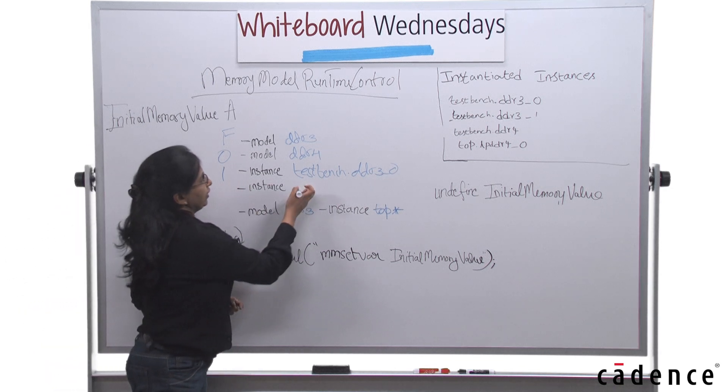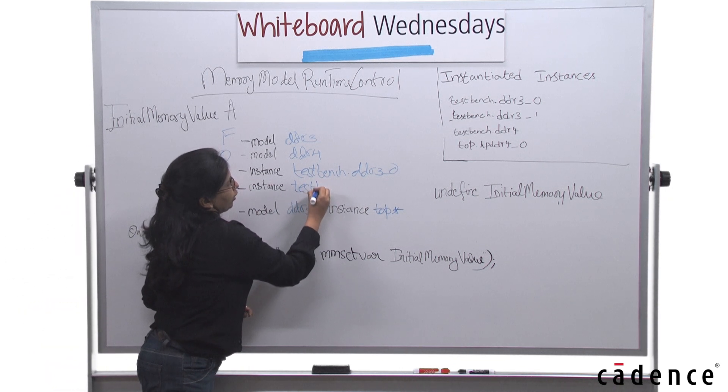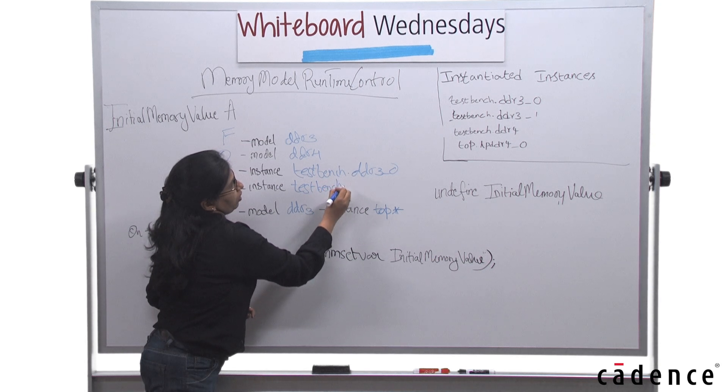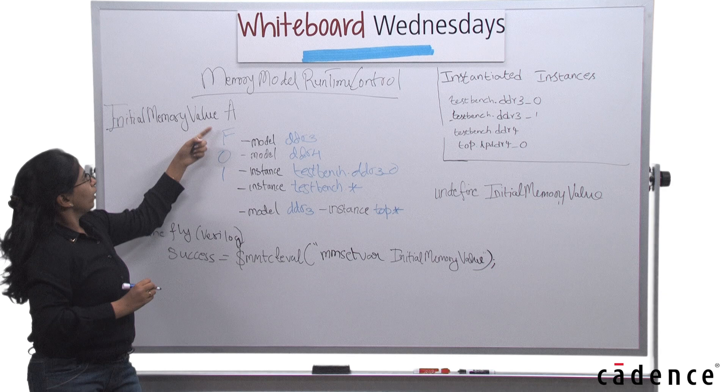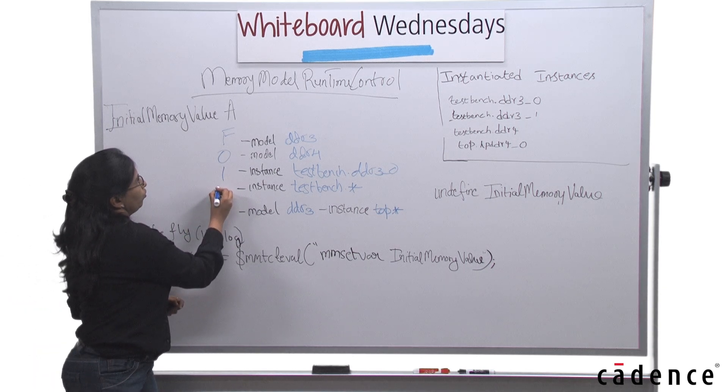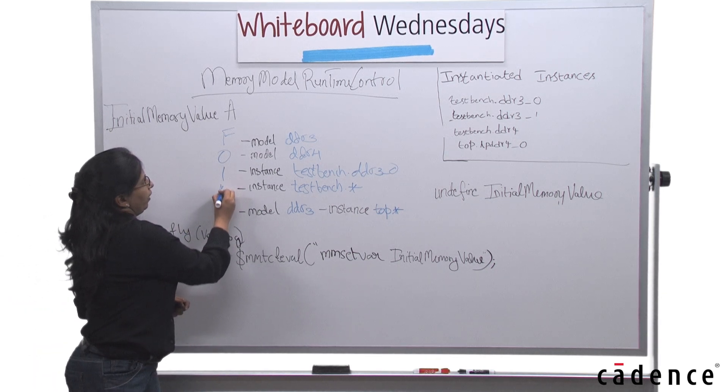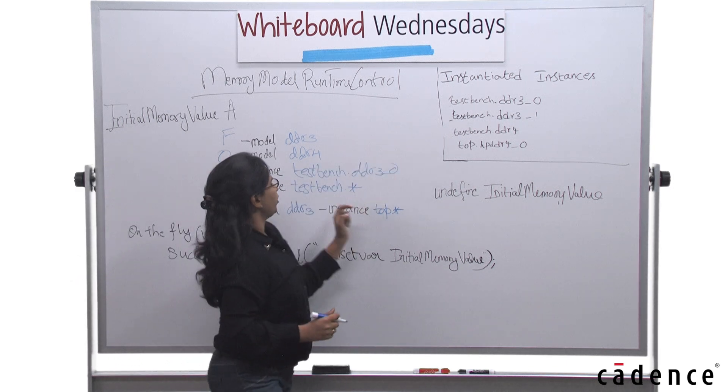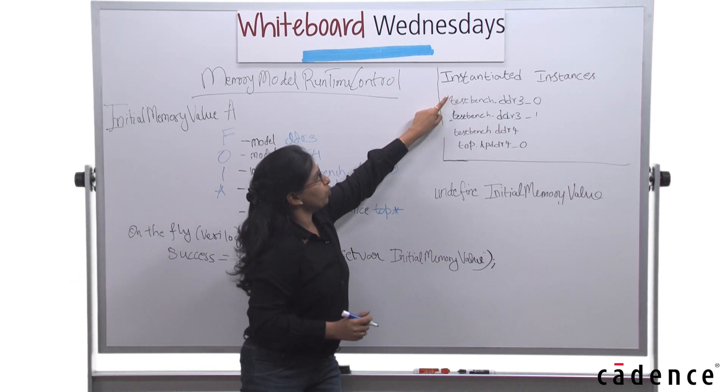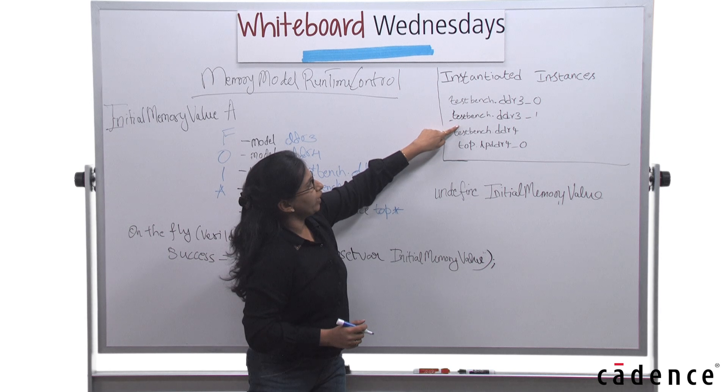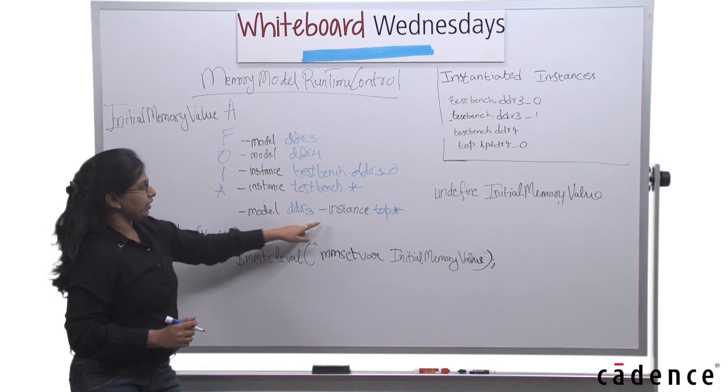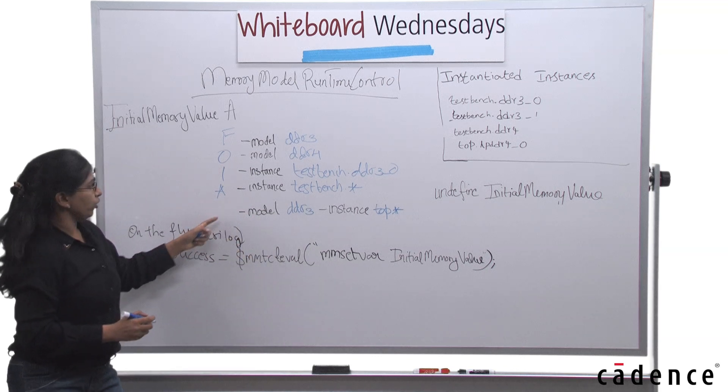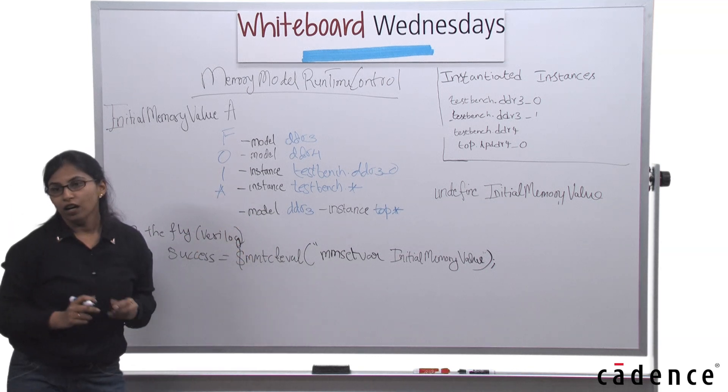You could say instance. If I said testbench.star, what would happen? It would take the initial memory value, let's say A again, for all the instances which are testbench.star, which would mean testbench.ddr3, 0, 1, and ddr4. All these instances will now take the value A.